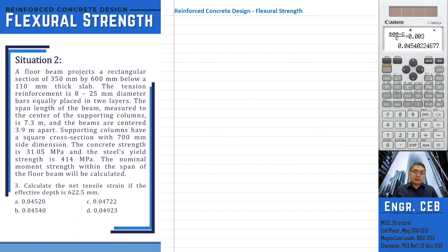Problem three, calculate the net tensile strain if the effective depth is 622.5 mm. So let us now draw the complete section of our T-beam with indicated dimensions.